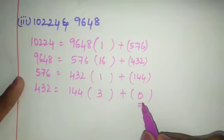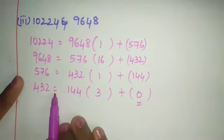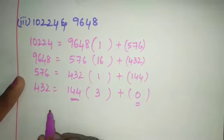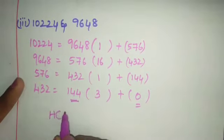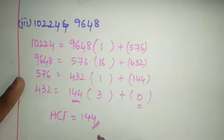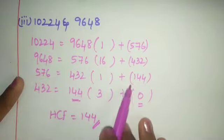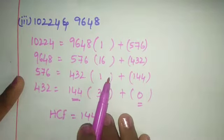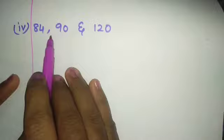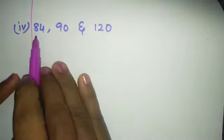When remainder is 0, stop. The number next to the equal sign is your HCF, which is 144. Check those multiplications once again. Next subdivision: 84, 90, and 120.